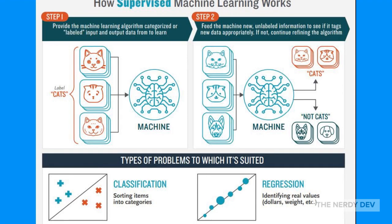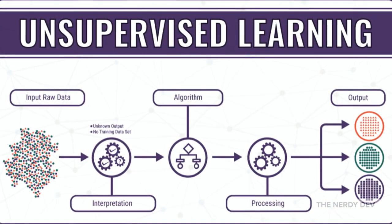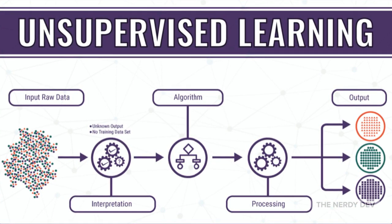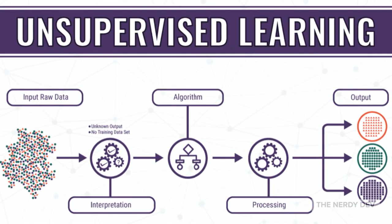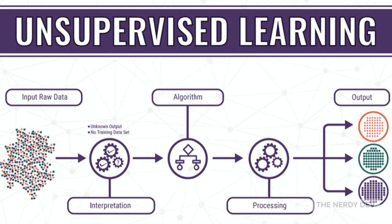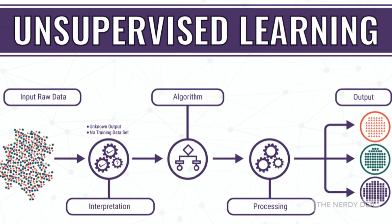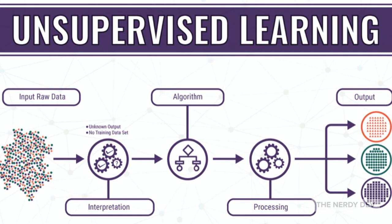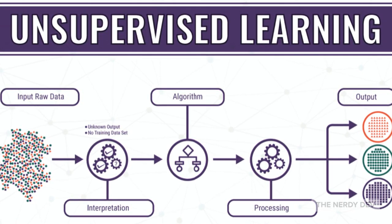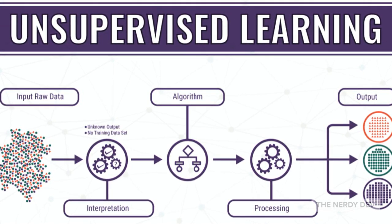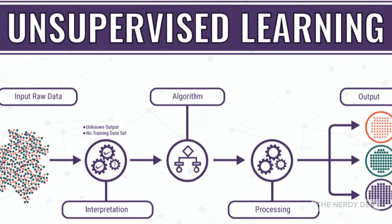Unlike supervised learning, in unsupervised learning no teacher or supervisor is provided — no training is given to the machine and no labels are provided to the data. Therefore, the machine is restricted to finding the hidden structure in unlabeled data by itself. This is called unsupervised learning.